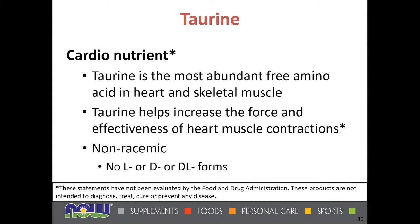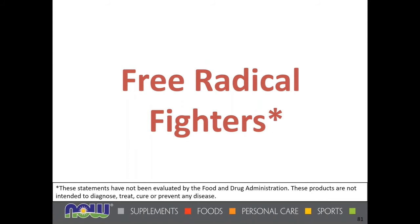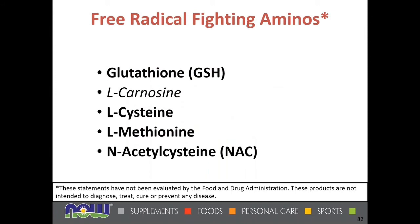Taurine is a cardio nutrient and is the most abundant free amino acid in the heart and skeletal muscle. It helps to increase the force and effectiveness of heart muscle contractions. Taurine has been recommended for many years, and as noted, it is non-racemic — there is no L or D form when describing taurine.